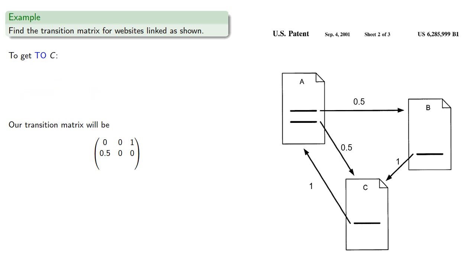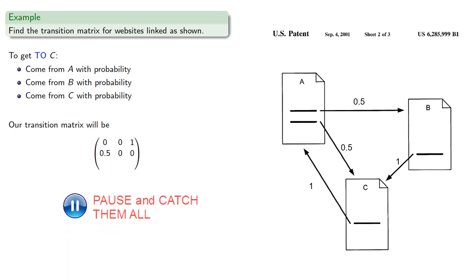And finally to get to C, you could have come from A, B, or C with probabilities. And so our transition matrix will be...